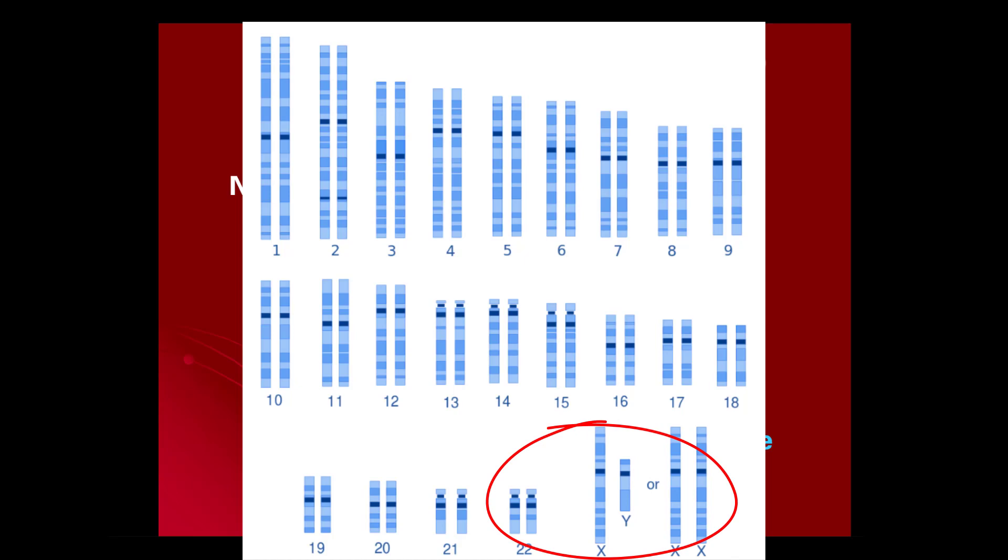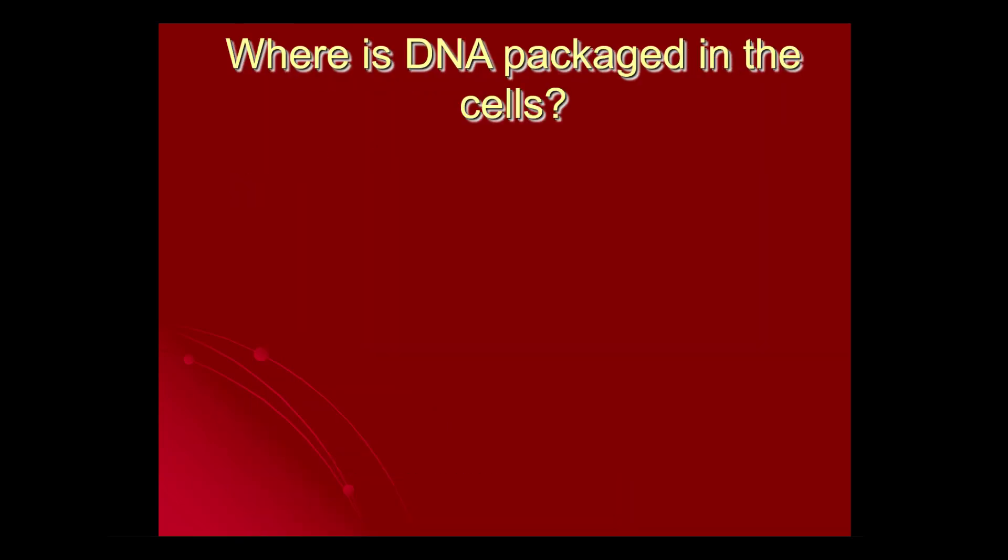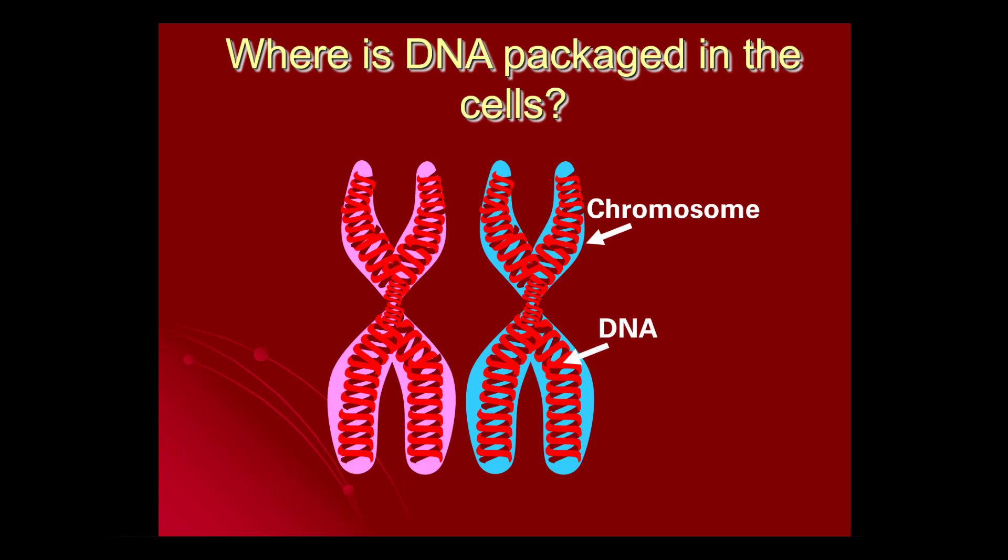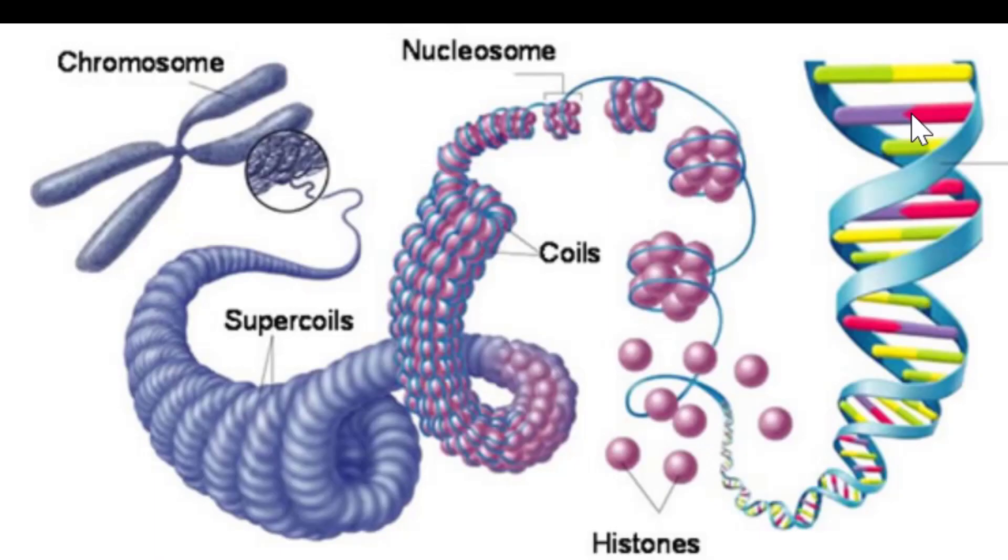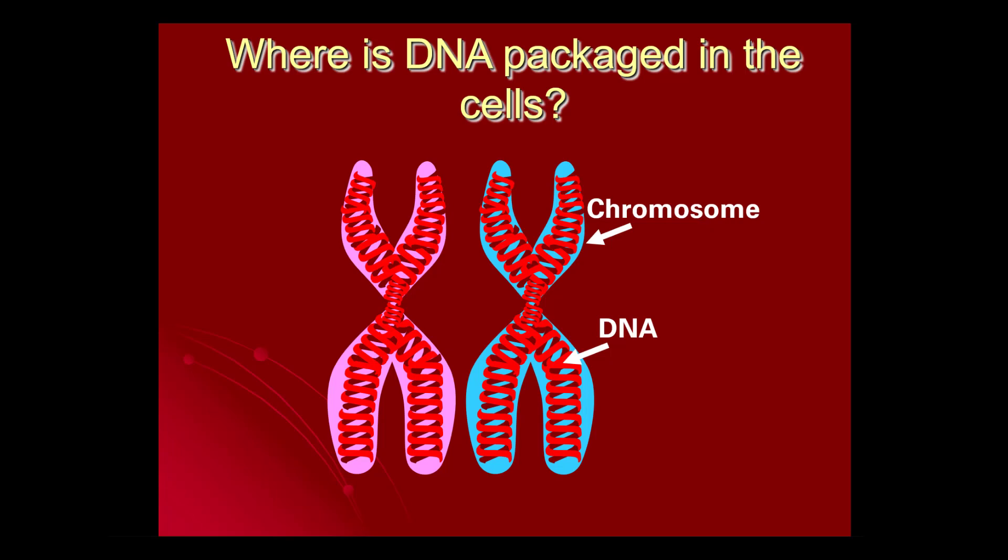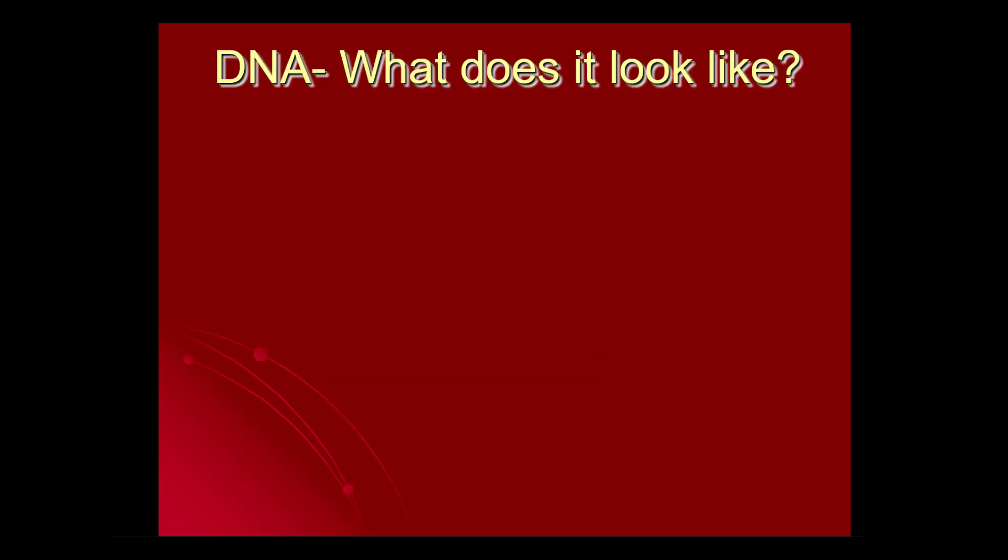Now within those chromosomes, your DNA is wound up in little coils and it's wound up on these things called histones. It's almost like if you imagine you had a rope and you twisted it and twisted it and twisted it and twisted it, eventually it would coil back in on itself, and that's what your DNA does in order to package into your chromosomes.